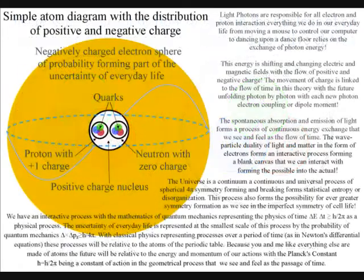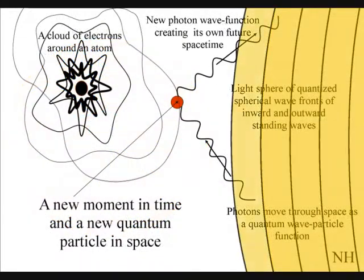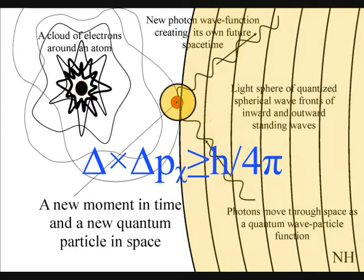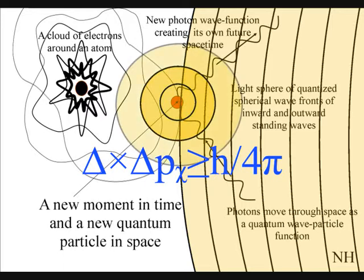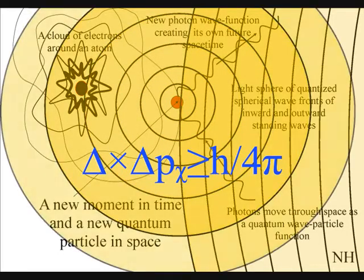This is what we would expect if what we experience as a period of time is formed by a process of energy exchange relative to the electron probability cloud that surrounds each atom. At the most fundamental level, this is a process of spherical symmetry forming and breaking.